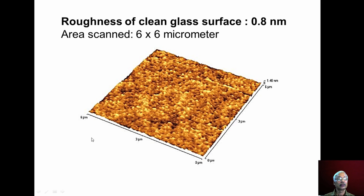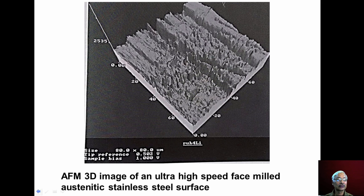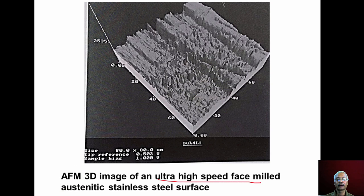Here we can see an image obtained by AFM of a clean glass surface. The scanned area is 6 micrometer by 6 micrometer and the roughness of this glass surface is 0.8 nanometer. There is also a three-dimensional image of an ultra high-speed phase-milled stainless steel surface, with a scanned area of about 80 micrometer by 80 micrometer.